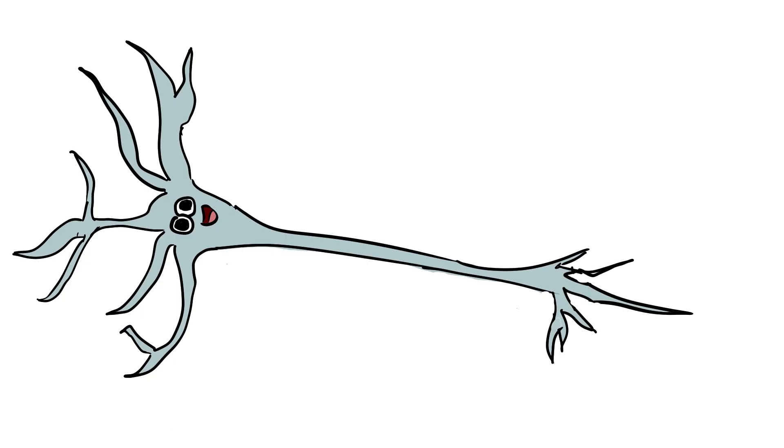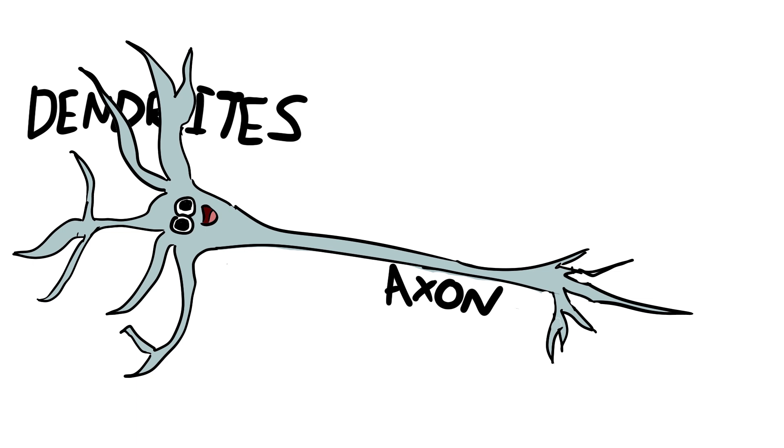This is Ben. He is a neuron. He has three main parts, the dendrites, which connect him to other neurons. This is where he receives his input from the other neurons. The soma is just the middle bit. No one really cares about the soma.